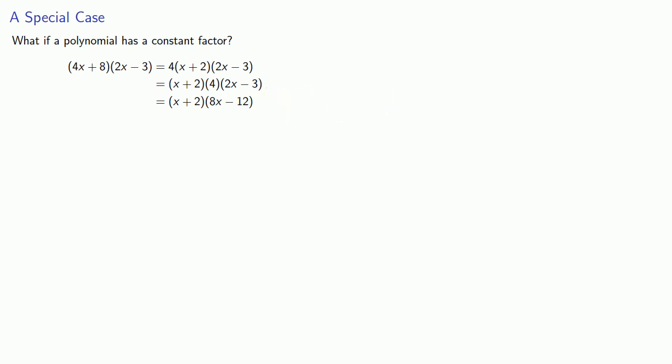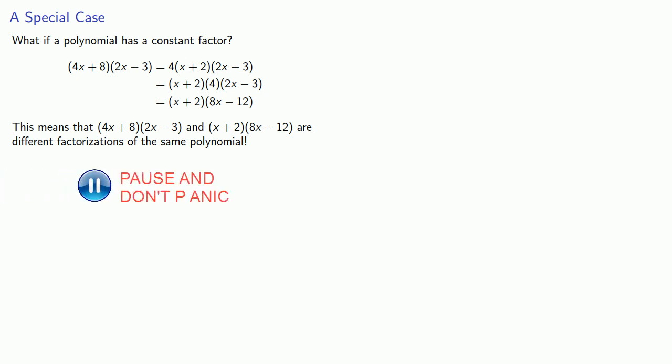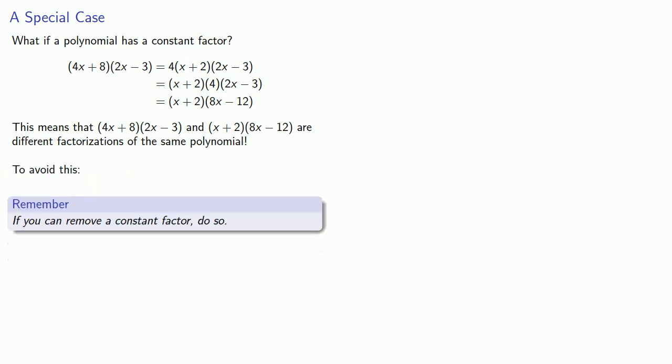And because multiplication is associative and commutative, I can move that 4 and migrate it into the second term by using the distributive property. Since I've maintained equality throughout, I can say that 4x + 8 times 2x - 3 is the same thing as x + 2 and 8x - 12. And this means that 4x + 8 times 2x - 3 and x + 2 times 8x - 12 are different factorizations of the same polynomial. To avoid this, it's useful to remember, if you can remove a constant factor, do so. So the proper final factorization of this polynomial would be this line where the common factor has been removed where possible.